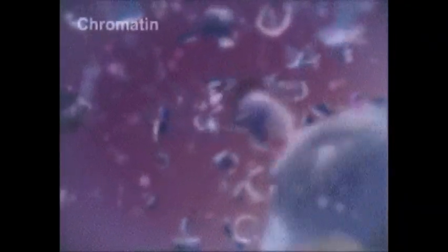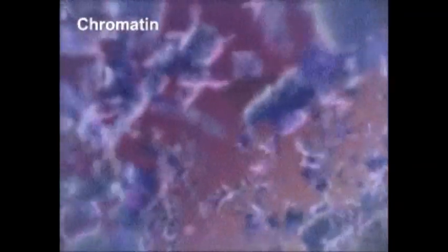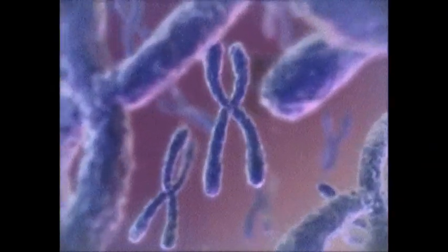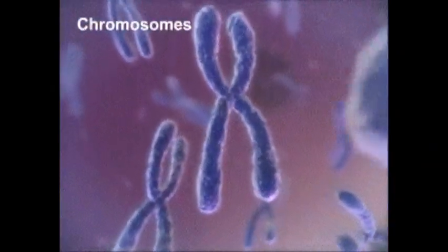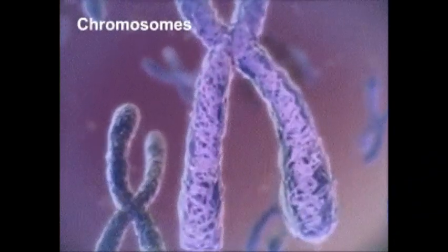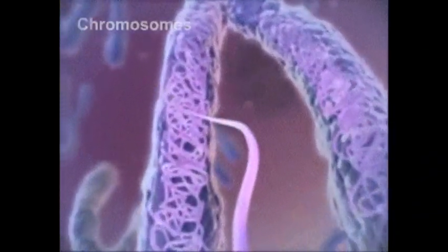The DNA and ribosomes are arranged in a loose and diffuse state called chromatin. During cell division, the chromatin condenses to form short, rod-like structures called chromosomes.